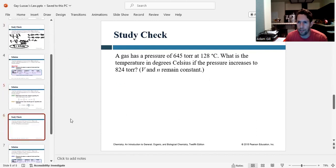Let's do one more practice problem. The gas has a pressure of 645 torr at 128 Celsius. What is the temperature in degrees Celsius if the pressure increases to 824 torr? So once again, volume and moles are constant. So we have P1 over T1 equals P2 over T2.